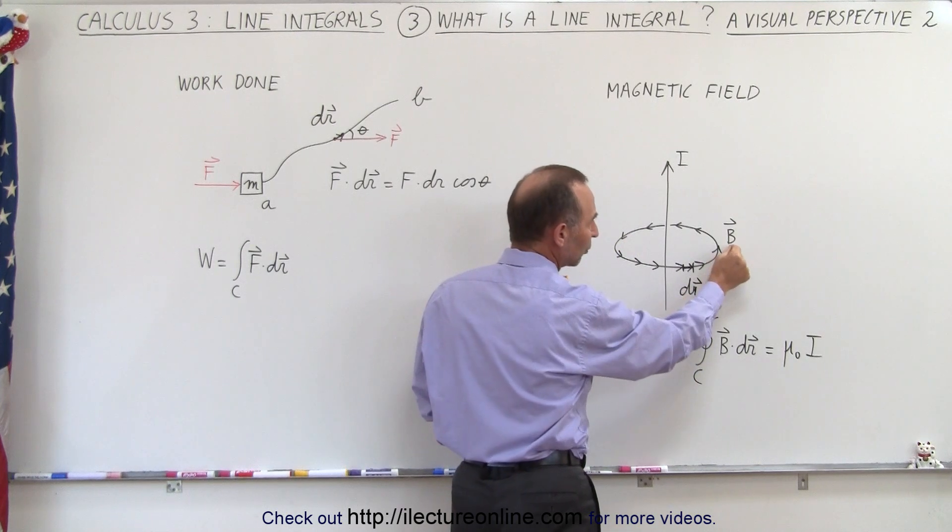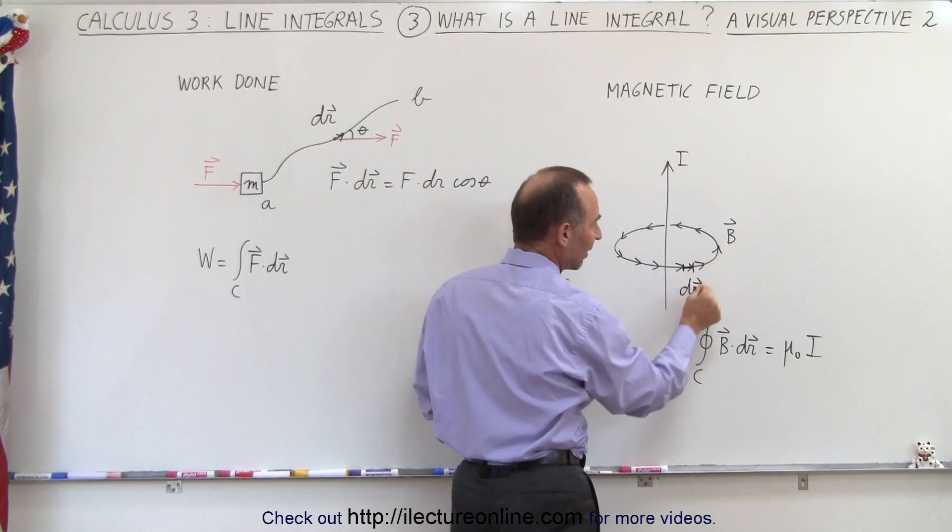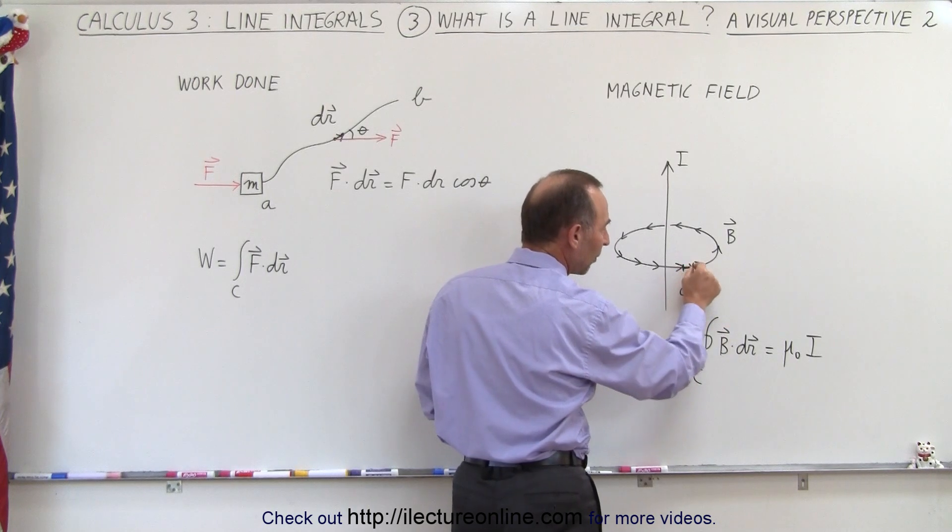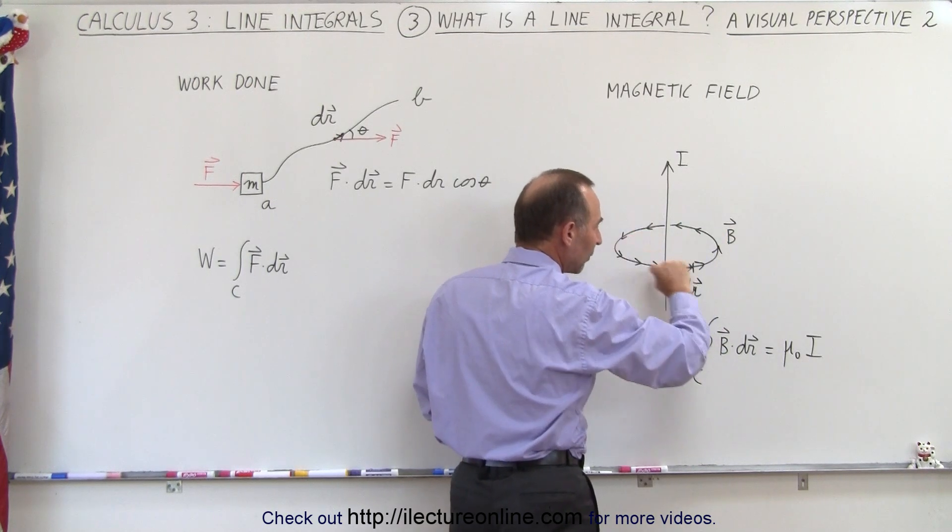We find that we've multiplied the strength of the magnetic field times the displacement, and then we integrate all those multiplications all the way around.